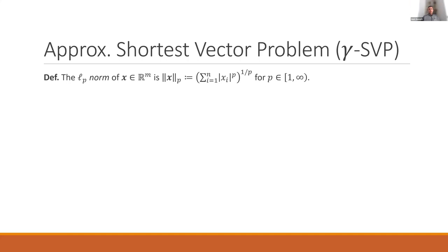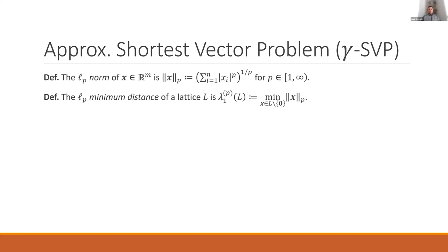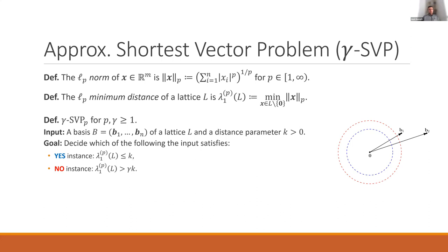To define the most important computational problem on lattices — the shortest vector problem — we recall the definition of an LP norm, which is just the p-th root of the sums of the p-th powers of absolute values of the coordinates. The LP minimum distance of a lattice is just the shortest non-zero vector in the lattice according to the LP norm.